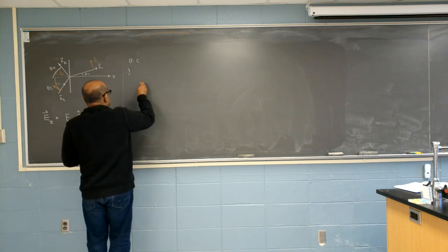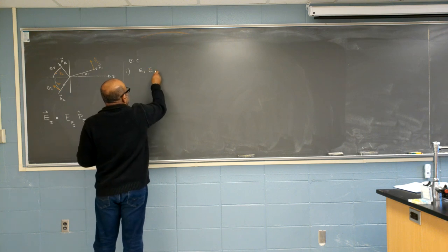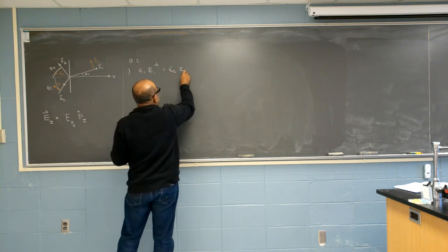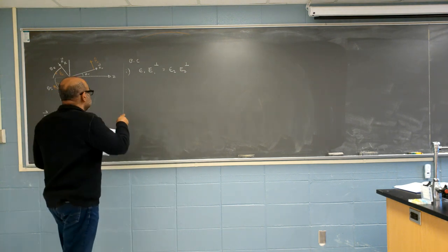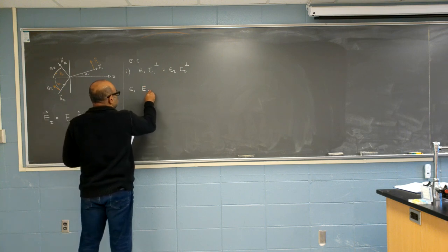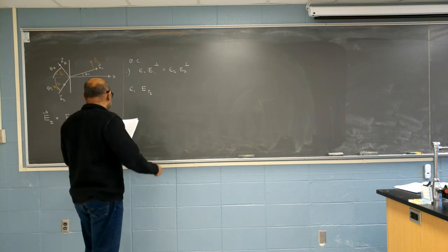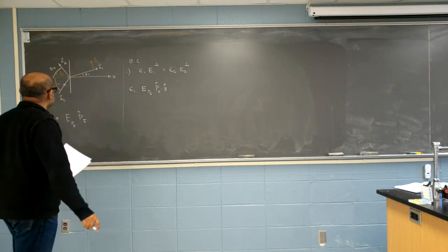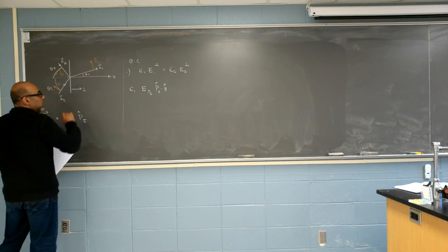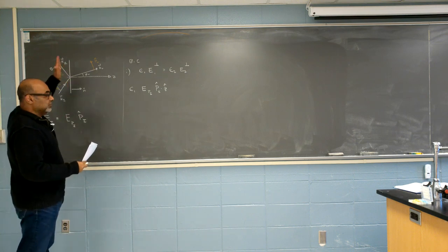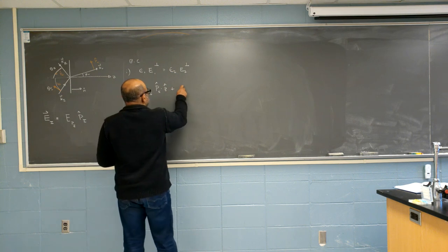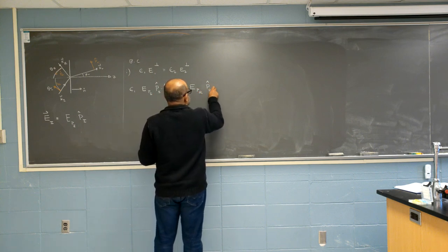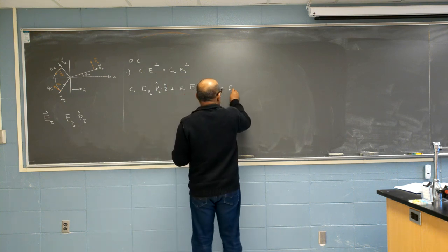The first boundary condition is that ε times E_normal is continuous. Let's look at what that means. We have ε₁ times the incident electric field in the pi direction, and we have to take the dot product with the normal. The normal here is the z-hat component, normal to the interface. We do the same thing for the reflected normal component, and it should be equal to the transmitted normal component.